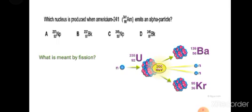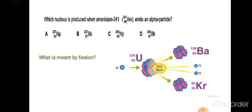Which nucleus is produced when Americium-241 emits an alpha particle? When alpha decay happens, the atomic number decreases by 2 and atomic mass decreases by 4. So atomic mass 241 becomes 237 and atomic number 95 decreases by 2 to become 93 — that is Neptunium-237, atomic number 93. Option A is correct.